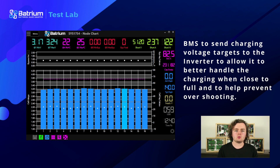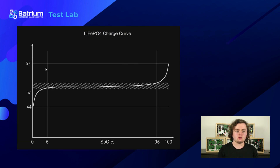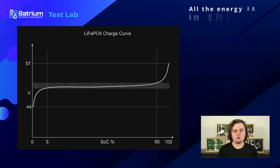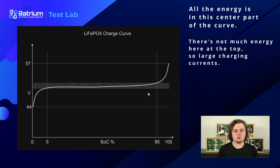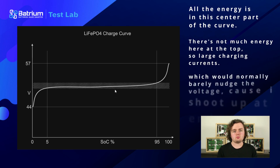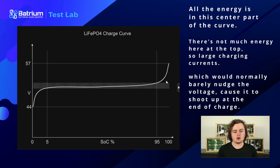As you might know, the charge curve for lithium iron phosphate looks something like this. You can see that all the energy is in the center part of the curve and that there's not much energy on top. Large charging currents, which would normally barely nudge the voltage, cause it to shoot up at the end of charge.